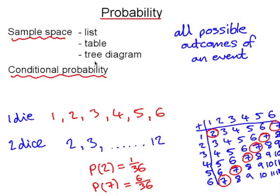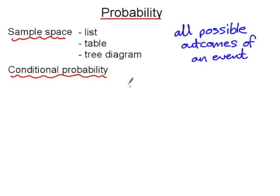The third way of showing a sample space is with a tree diagram. And a tree diagram is useful for three or more events, such as flipping a coin three times. It could be heads or tails for the first flip, heads or tails for the second flip, and then heads or tails for the third flip.